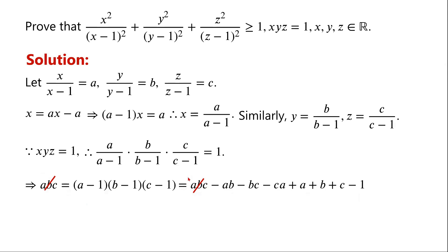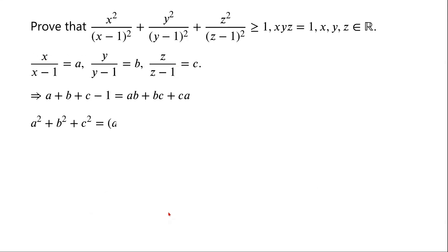So ab + bc + ca = a + b + c - 1. We know that a² + b² + c² can be written as (a + b + c)² minus 2(ab + bc + ca).